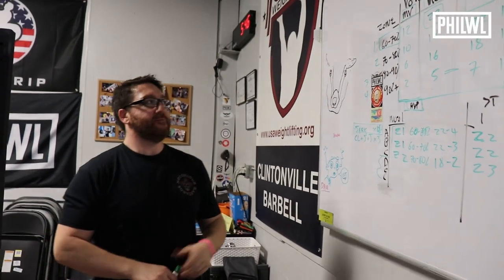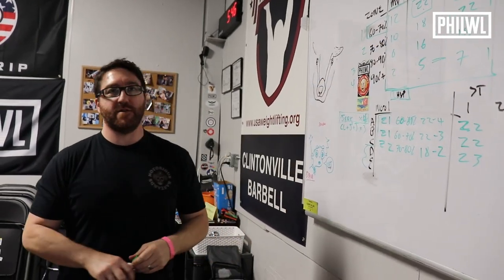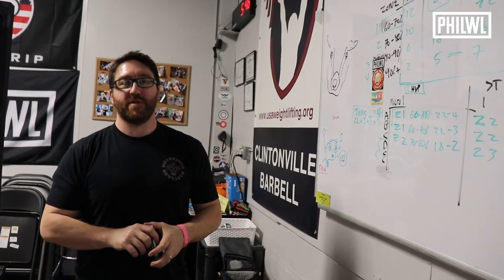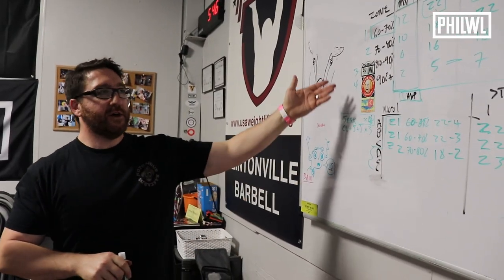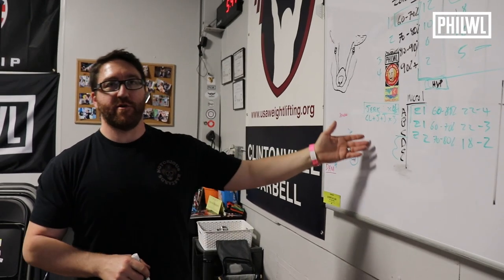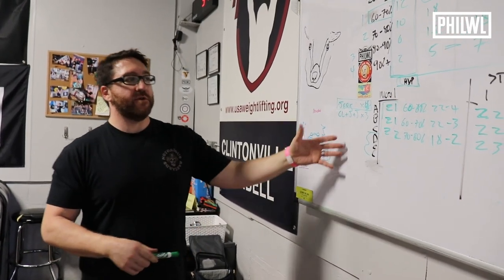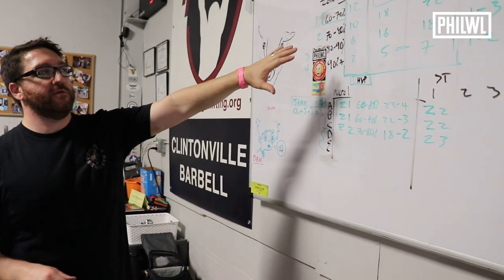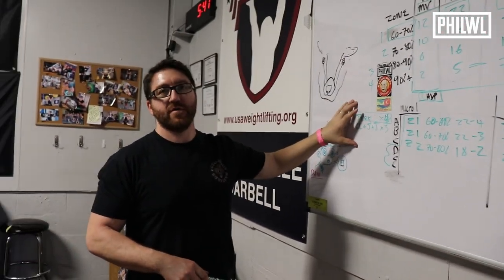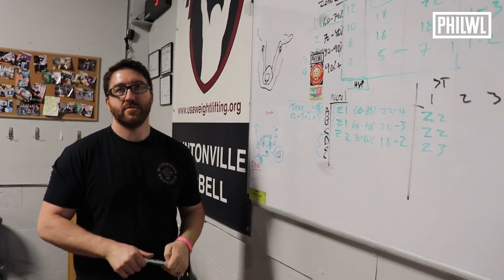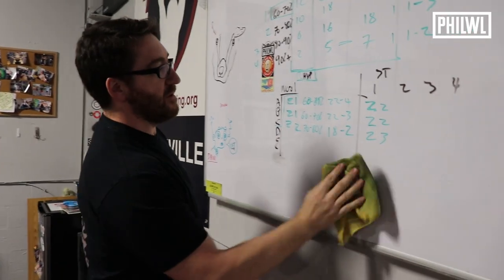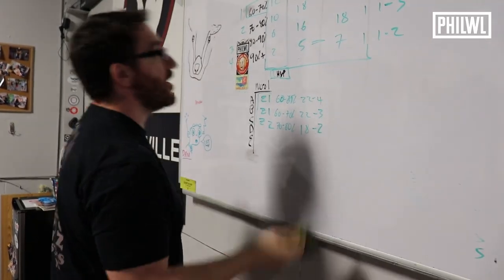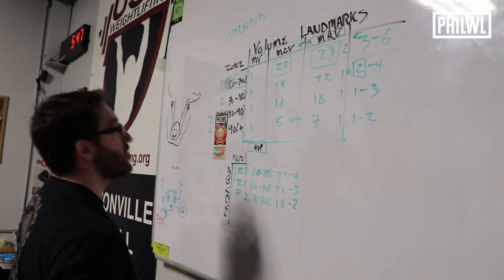The total volume is more important than any single session. You might have somebody do 10 singles in what's technically maintenance volume at 80 percent, because that's a pretty good workout — the threshold might actually be six. Instead of three doubles you could do six singles, no hook, no feet, at 70 percent — and that's a technique session for them. That's basically how you apply overload landmarks to exercise choices.